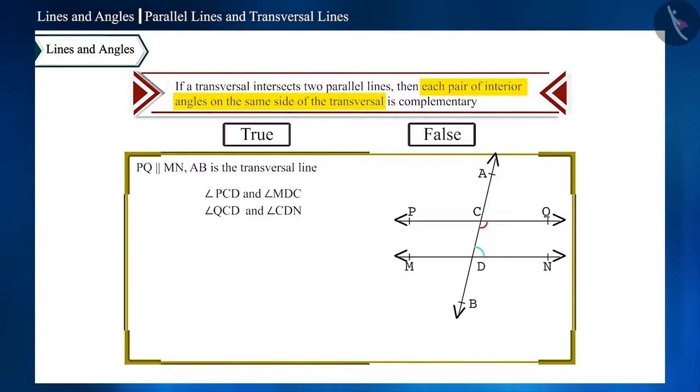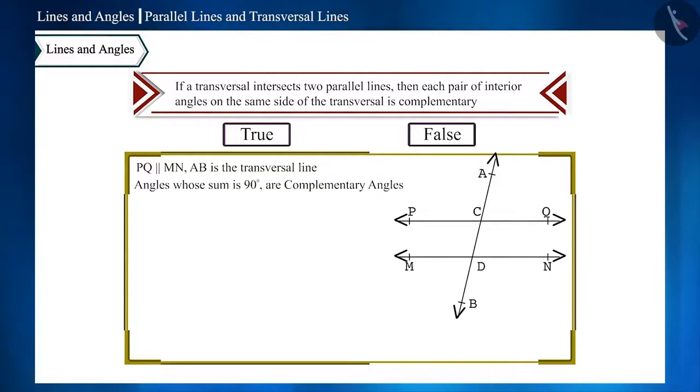And we know that angles whose sum is 90 degrees are complementary angles. Is the sum of these angles 90 degrees? From the figure we know that their sum is more than 90 degrees.